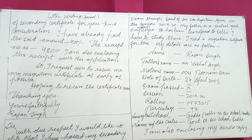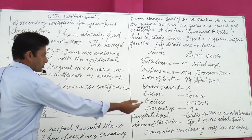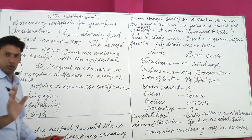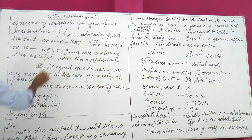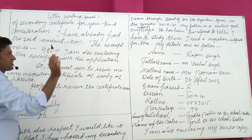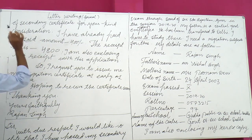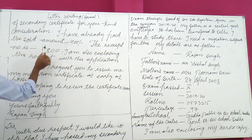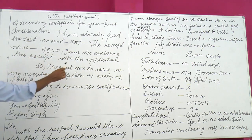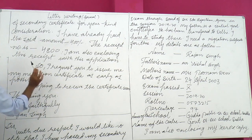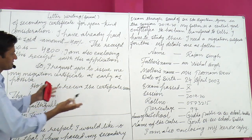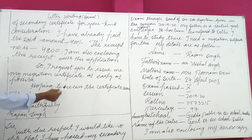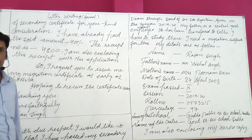To summarize: 'Enclose' means to attach. Xerox copy means photocopy. Xerox copy of secondary certificate for your kind consideration. I have already paid the said amount — 'said' means the specified amount — Rupees 400. Receipt number such-and-such. I am also enclosing this receipt with the application. So I request you to issue me my migration certificate as early as possible. Hoping to receive the certificate soon. Thanking you. Yours faithfully. That's all for this lesson.